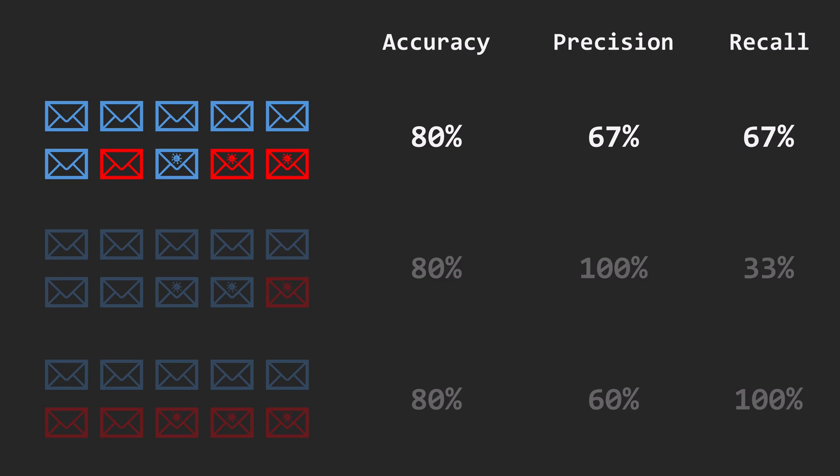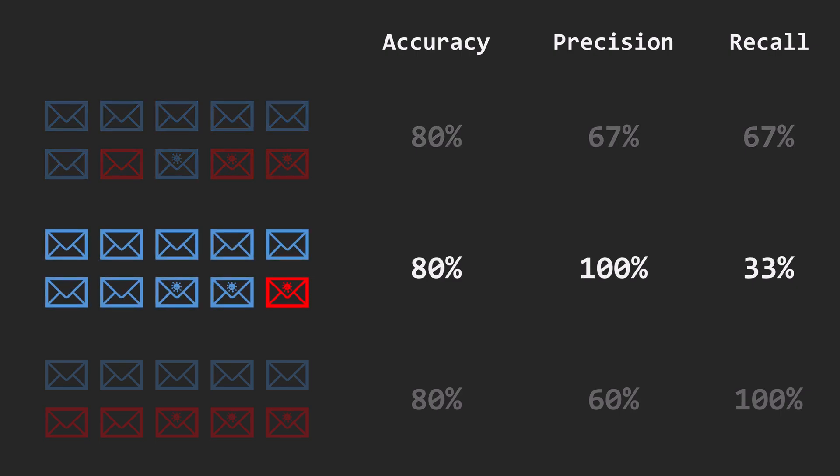And while recall is also 67%, not every spam mail is detected, so some unwanted mails will make it into the inbox. The second model has 100% precision, so we don't have to worry about mislabeled regular emails and don't have to check the spam folder.